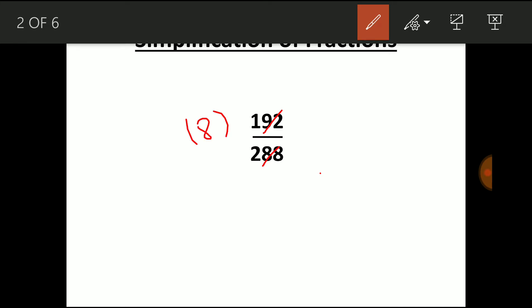So let me start from 8. If I cancel by 8, 8 into 24 is 192 and 8 into 36 is 288. Even 24 by 36 is not the proper fraction. So let us reduce by 12th table. If I cancel by 12, you get 2 by 3. So 2 by 3 is the proper fraction.